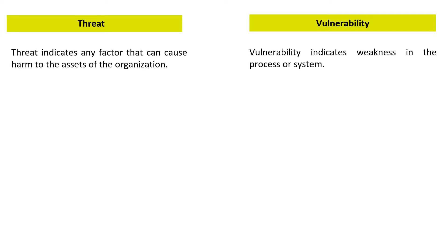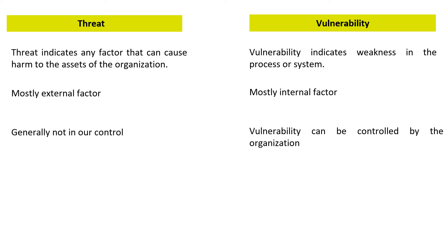Another important aspect is to understand the difference between threat and vulnerability. One of ISACA's favorite exam tactics is to confuse us between the terms threat and vulnerability. Threat indicates any factor that can cause harm to the assets of the organization. Vulnerability indicates weakness in the process or system. Threat is mostly an external factor whereas vulnerability is mostly internal. Threat generally cannot be controlled by the organization whereas vulnerability can be controlled by taking appropriate steps.